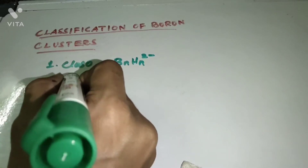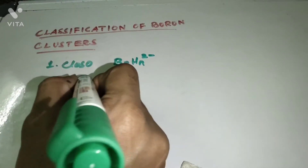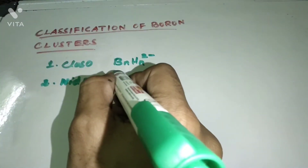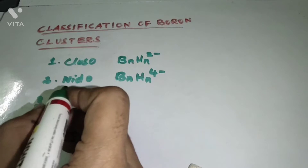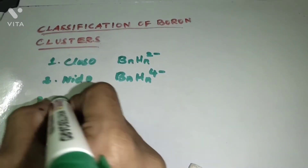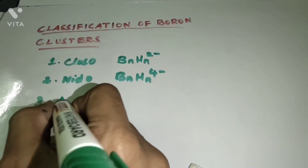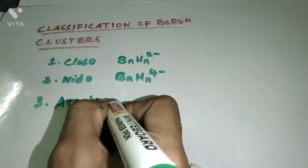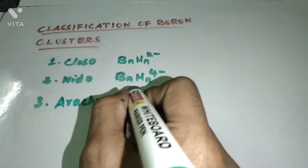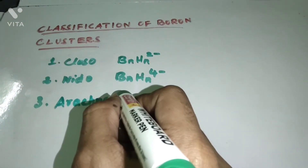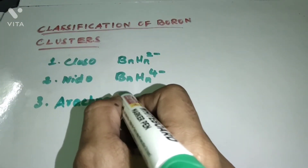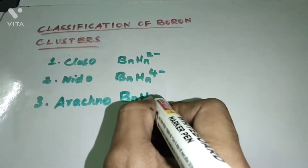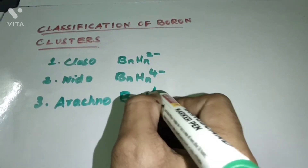The second type is Nido boron. The third type is Arachno. The general formula of the Arachno type cluster is BnHn⁶⁻.